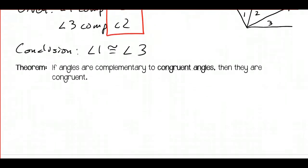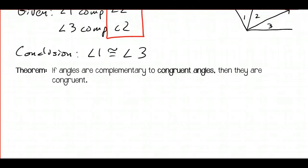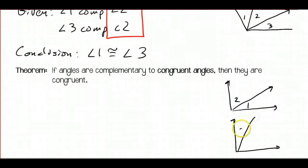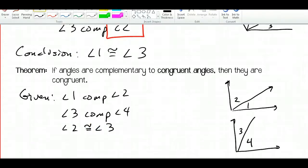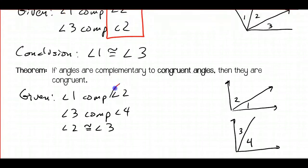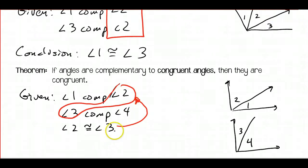Moving on to the last theorem for today: if angles are complementary to congruent angles, then they are congruent. Our pictures are going to vary. We could have something like this — there's angles 1 and 2, and here's angles 3 and 4. We may be given that angle 1 is complementary to angle 2 and angle 3 is complementary to angle 4. We would also know that angle 2 is congruent to angle 3. So if angles 1 and 4 are complementary to these congruent angles, our conclusion would be that angle 1 is congruent to...